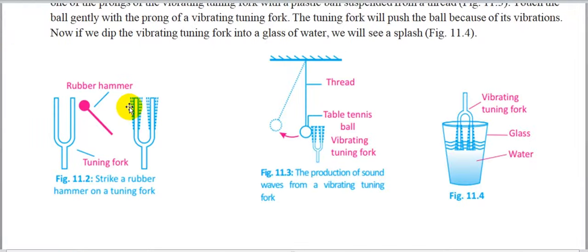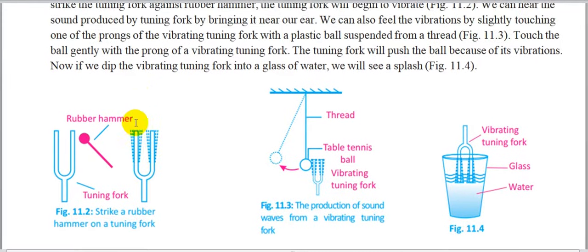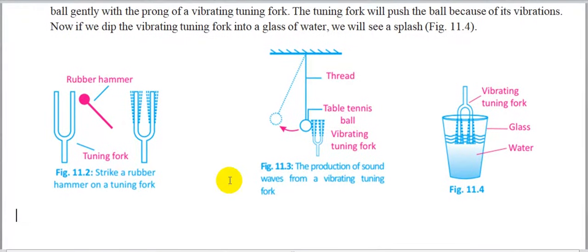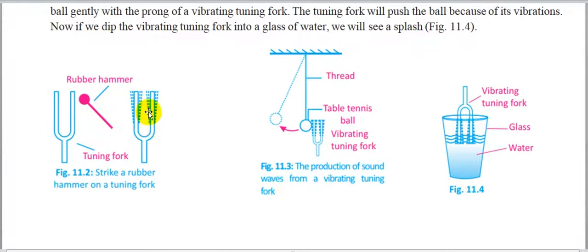Now let us look at some laboratory experiments to see how we can produce sound. In school laboratories, we use a device called a tuning fork to produce a particular sound. A tuning fork is U-shaped with a hammer at the bottom. When this tuning fork is hit, as shown in the given figure, its left and right arms begin to vibrate, as illustrated in the figure.